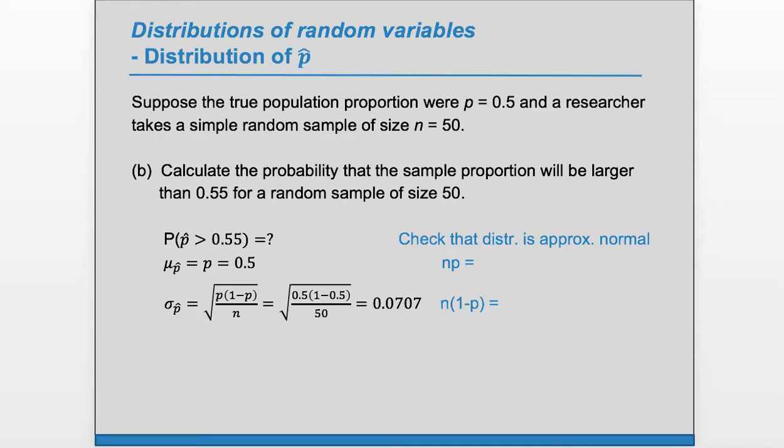Now let's check to see if normal approximation will be a good approximation for this distribution of p hat. We need np and n times 1 minus p to be at least 10. In this case, np is 50 times 0.5, which is greater than or equal to 10. n times 1 minus p is also 50 times 0.5, which is greater than or equal to 10. So normal approximation will be reasonable here, and we can find a z-score.